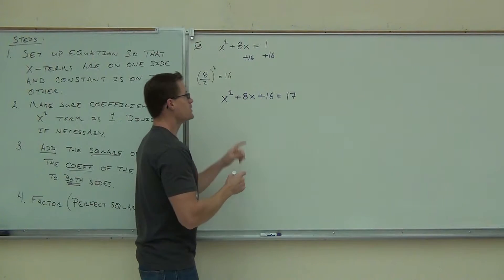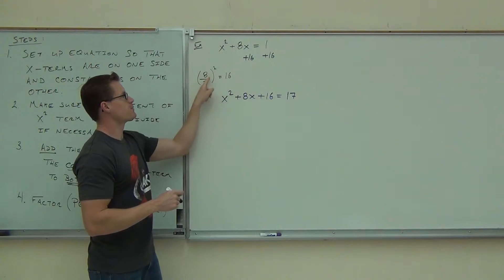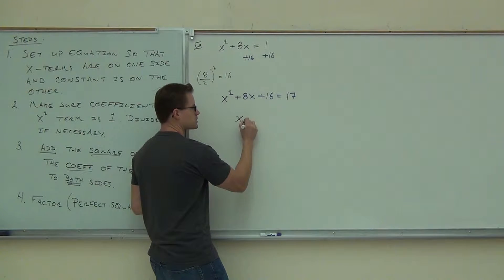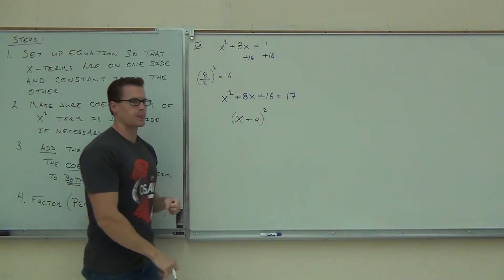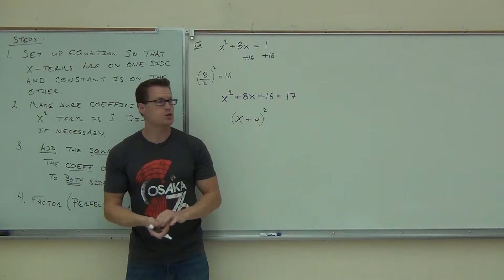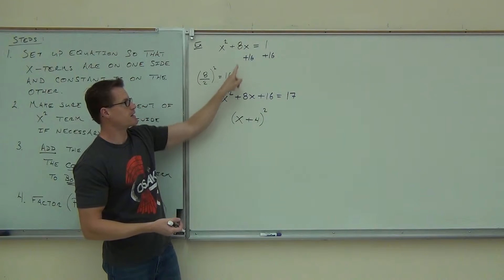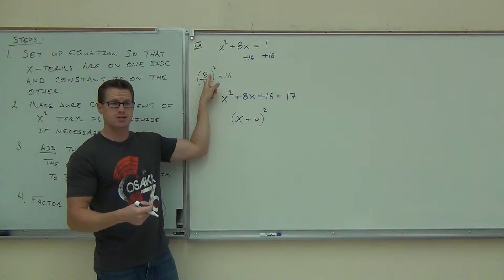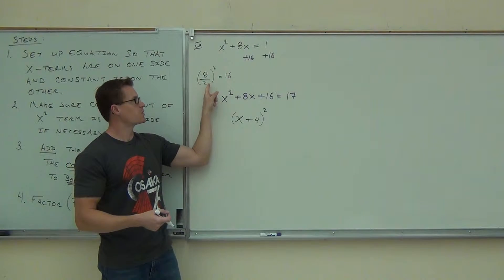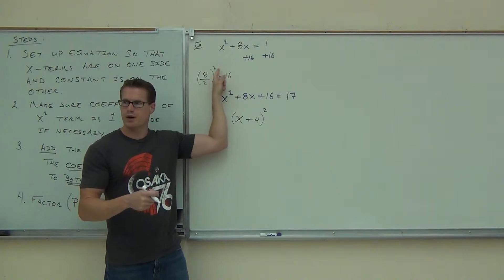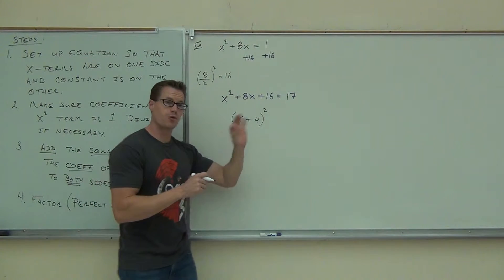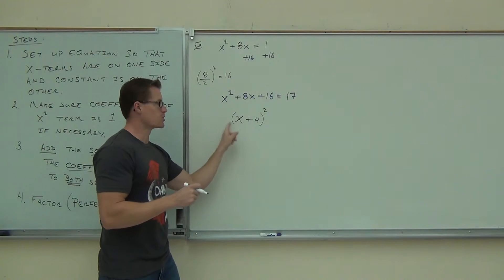Or, you remember what I told you last time. The number that you found here by dividing by two, that number right here, this four, this is how this will be factored: x plus four squared. Where's the four coming from? It's not magic. You're taking this number, dividing it by two, and you get that. It's the same exact thing you did here. You divided eight by two, and then you squared it. So the number you get before you square it is exactly the number you're going to factor with. Nod your head if you're okay with that.